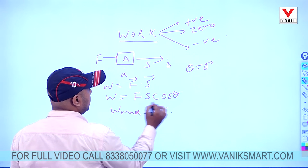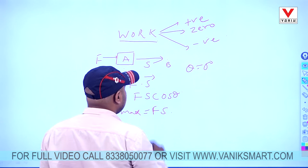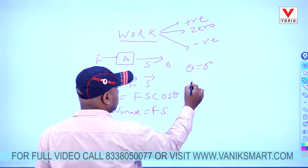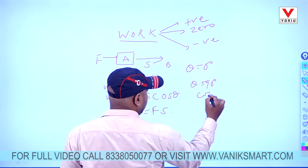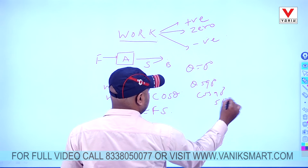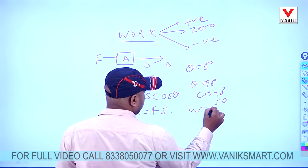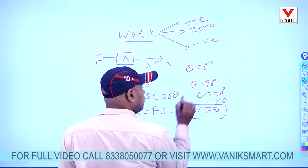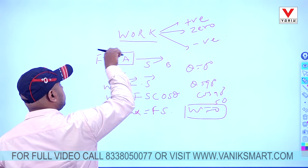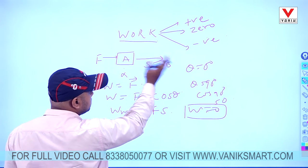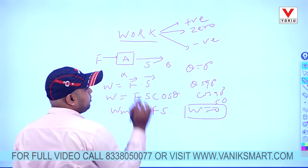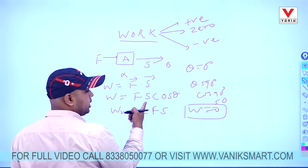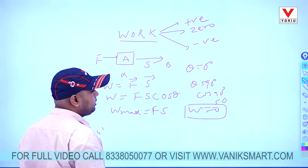So zero work means this entire term has to be zero. So when this entire term has to be zero, then theta must be equal to 90 degree. If I take theta 90 degree, then cos 90 degree will be zero. When cos 90 degree is zero, work done is also zero. Or you can simply say when force is applied on a body and the body does not get displaced. The body is not displacing at all. At that point displacement is also zero. So if you substitute S as zero, you will get work as zero.